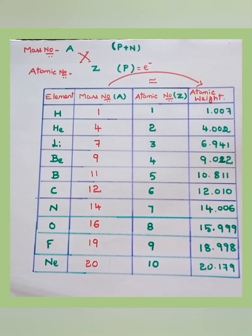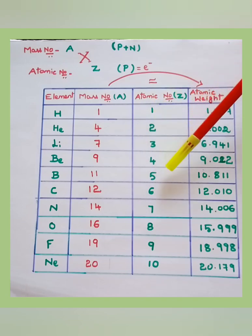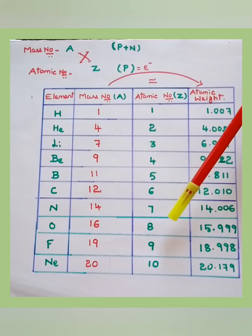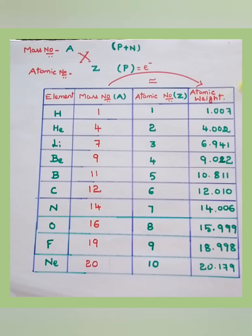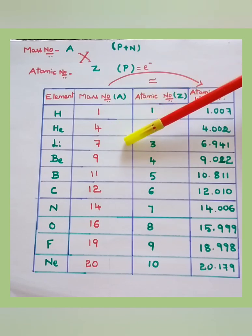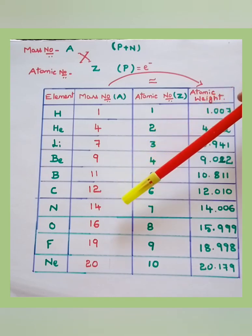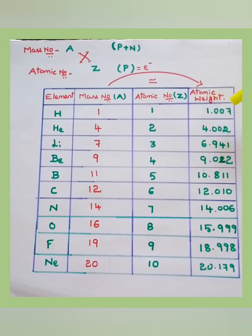Let's check how mass number and atomic number relate to atomic weight. For hydrogen, mass number is 1. The atomic numbers are: hydrogen 1, helium 2, lithium 3, beryllium 4, boron 5, carbon 6, nitrogen 7, oxygen 8, fluorine 9, neon 10. The mass numbers are: hydrogen 1, helium 4, lithium 7, beryllium 9, boron 11, carbon 12, nitrogen 14, oxygen 16, fluorine 19, neon 20. The atomic weight of hydrogen is about 1.007, approximately equal to its mass number.